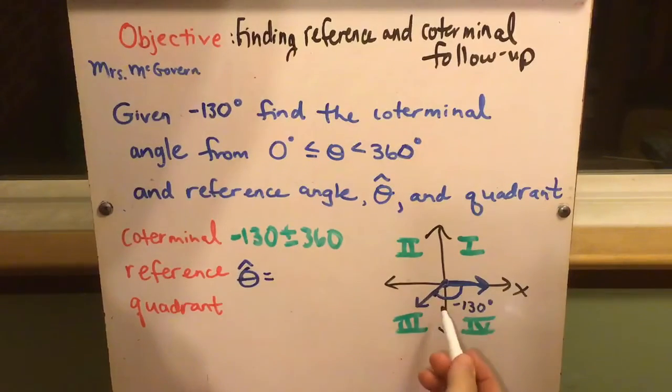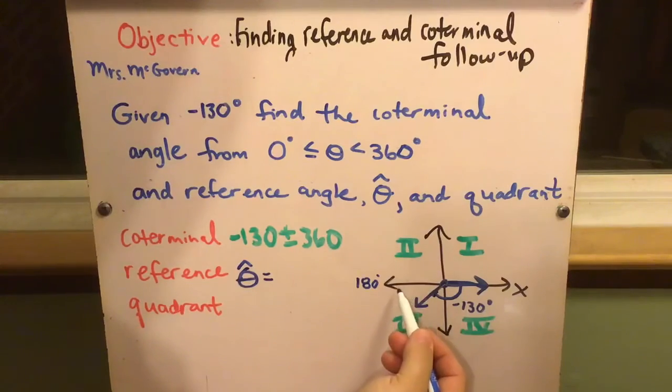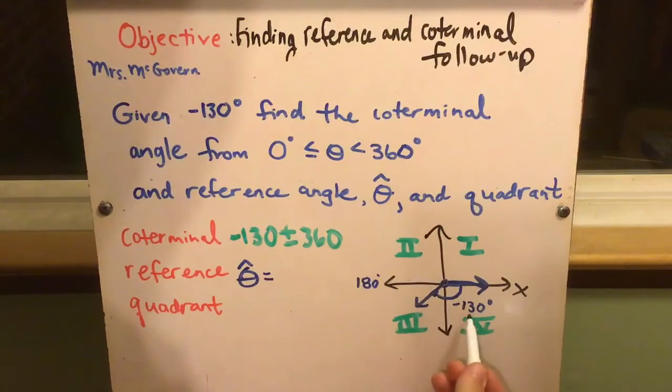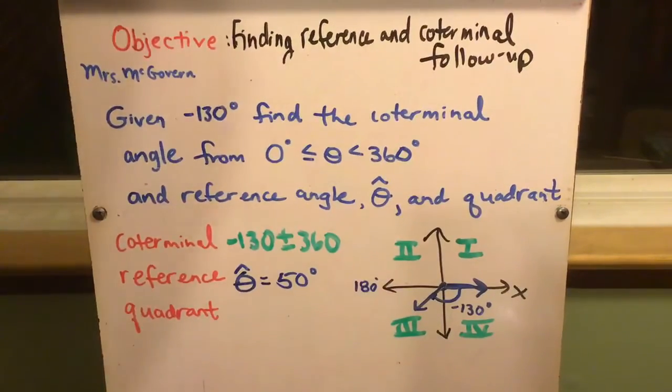If you looked at this picture visually, we know 180 counterclockwise and negative 180 clockwise. Either way, to get from 130 to 180 you have to go another 50. So you would say 50 degrees is the reference angle. It's always a positive answer and it's always how far you are from the x-axis.